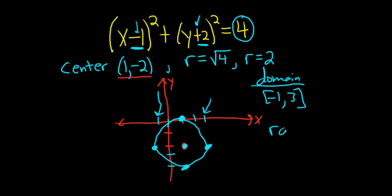To find the range, you just look at the y values. So the smallest y value is 1, 2, 3, 4, so negative 4. And the biggest one is 0.